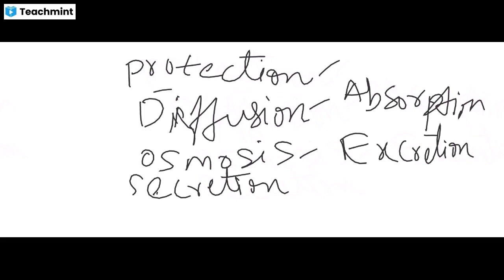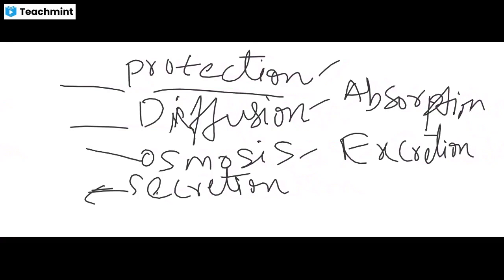To summarize the main functions of epithelial tissue: it helps in protection, diffusion, osmosis, secretion through glands, absorption, and excretion. These are all the main functions of epithelial tissue.